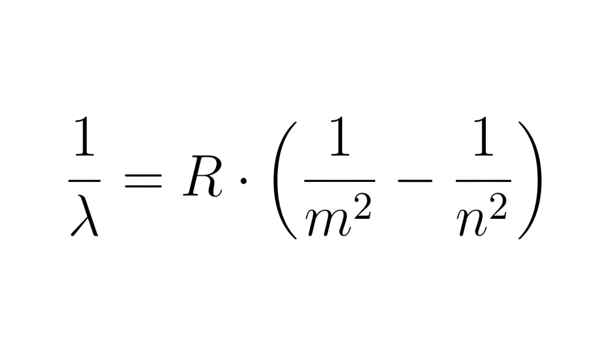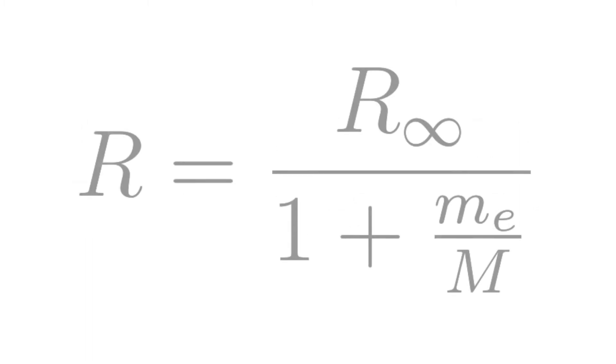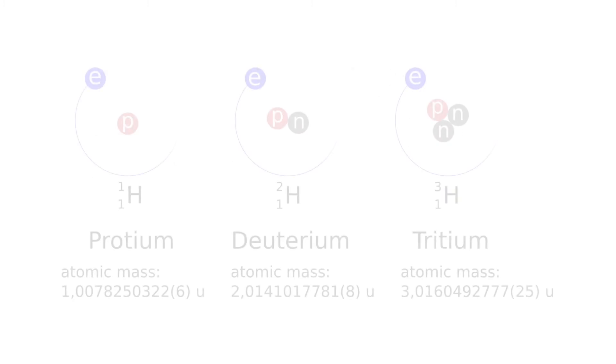The Rydberg equation makes it possible to determine the frequency of a photon emitted when an electron passes from the state of the main quantum number n to the state with the main quantum number m. The Rydberg constant R required for this depends on the mass of the nucleus. It is defined by R = R_∞/(1 + m_e/M), where R_∞ is the Rydberg constant for an infinite nuclear mass, m_e the mass of the electron, and M the nuclear mass.